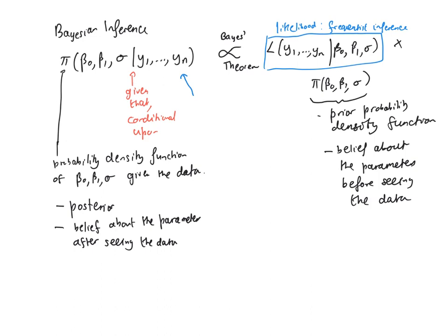One criticism of the Bayesian approach is that the prior probability density function has to be specified by the user — we have to specify what we believe about the parameters before seeing the data, which can be quite difficult. Sometimes we might have good knowledge based on a previous study, but often we don't. What we tend to do is assume that before seeing the data the parameters are independent, so that prior PDF splits into a product of three simple priors for each of beta 0, beta 1, and sigma.